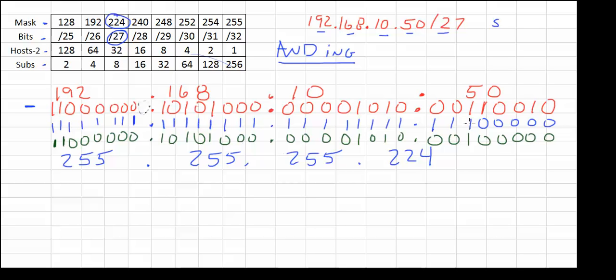So if we do 00100000, we can look up at our chart real quick, and we know that the third digit is 32 on our binary chart. So we know the ANDing number is going to be 192.168.10, and notice that's the exact same number as our IP address because it's on the same network because of our subnet mask. But now this one is .32. So our IP address is .50. We now know that our network address is .32.